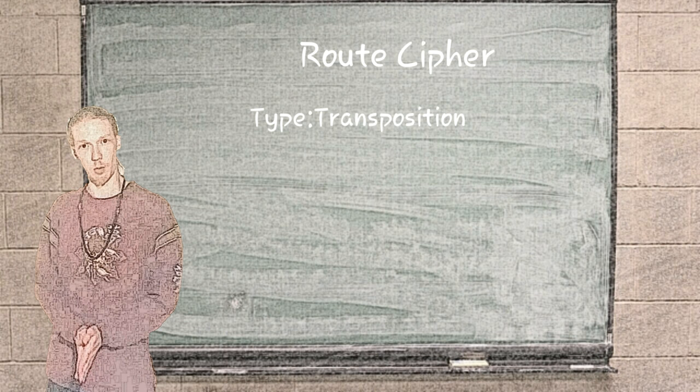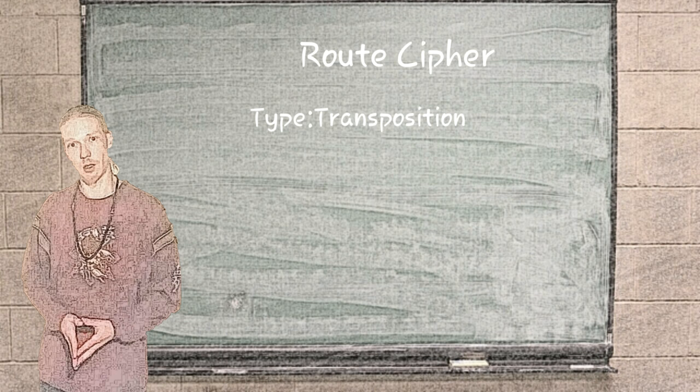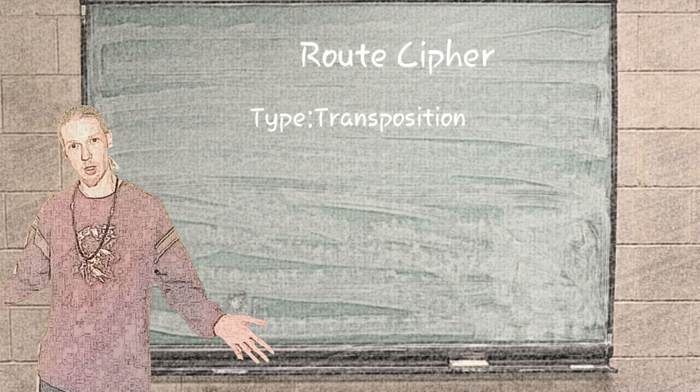During the United States' Civil War, the Union used a modified route cipher for some of their communications. Let's take a look at how the basic form works.